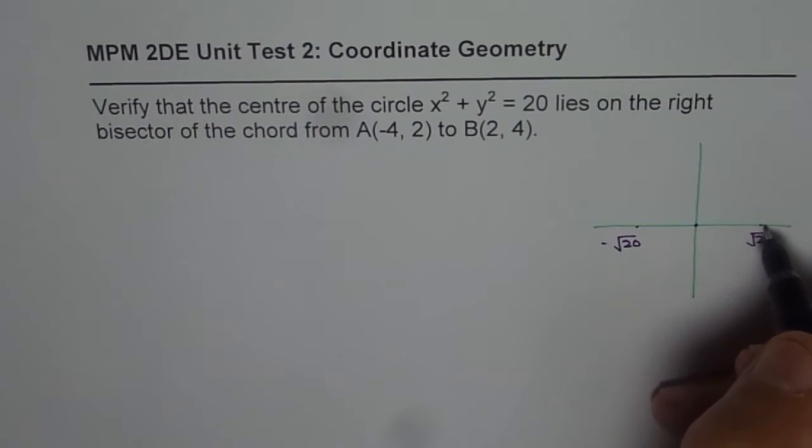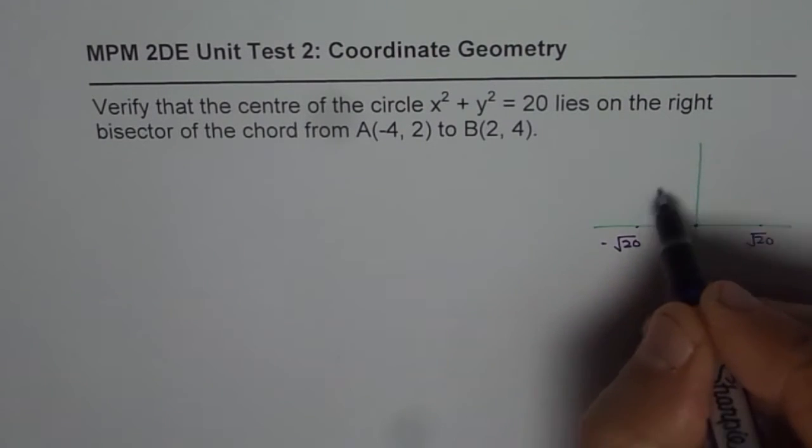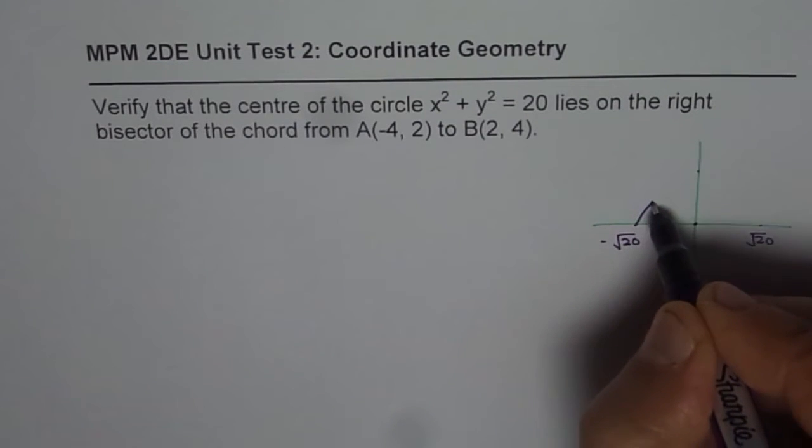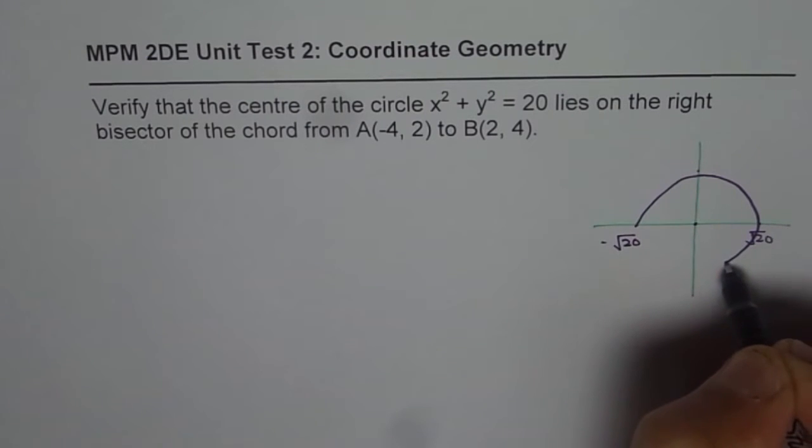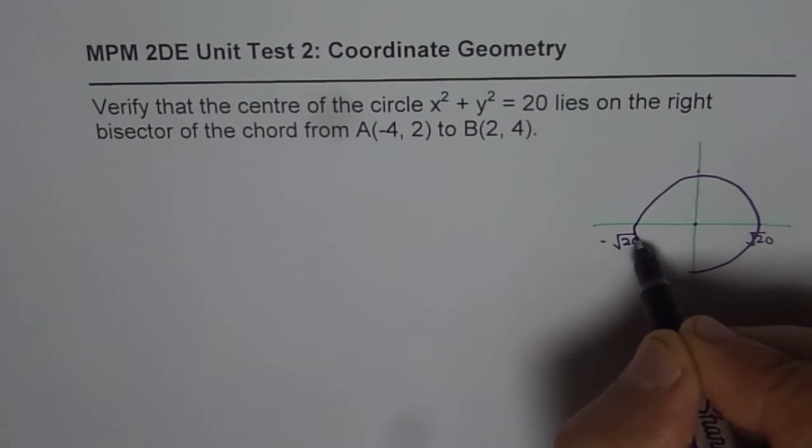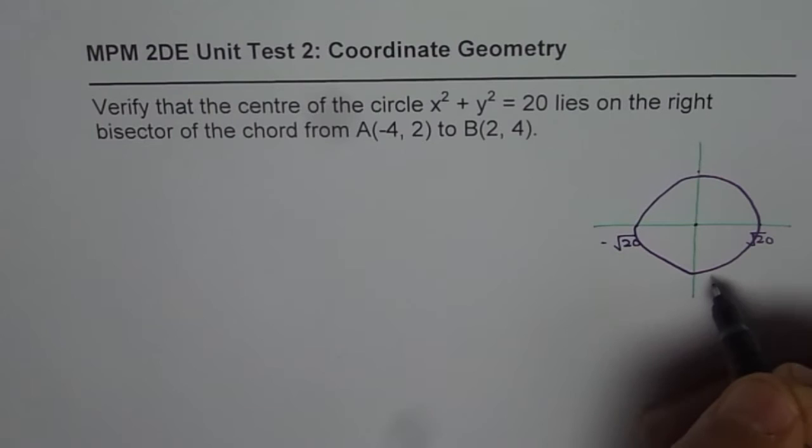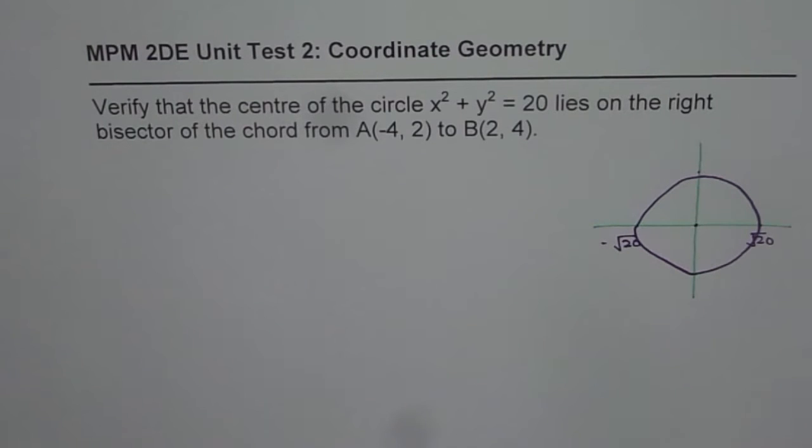The radius is slightly more than 4 but less than 5, right. So it is between 4 and 5. So we can just connect these points and form a circle. So we have a circle here, kind of hurried it. Anyway.